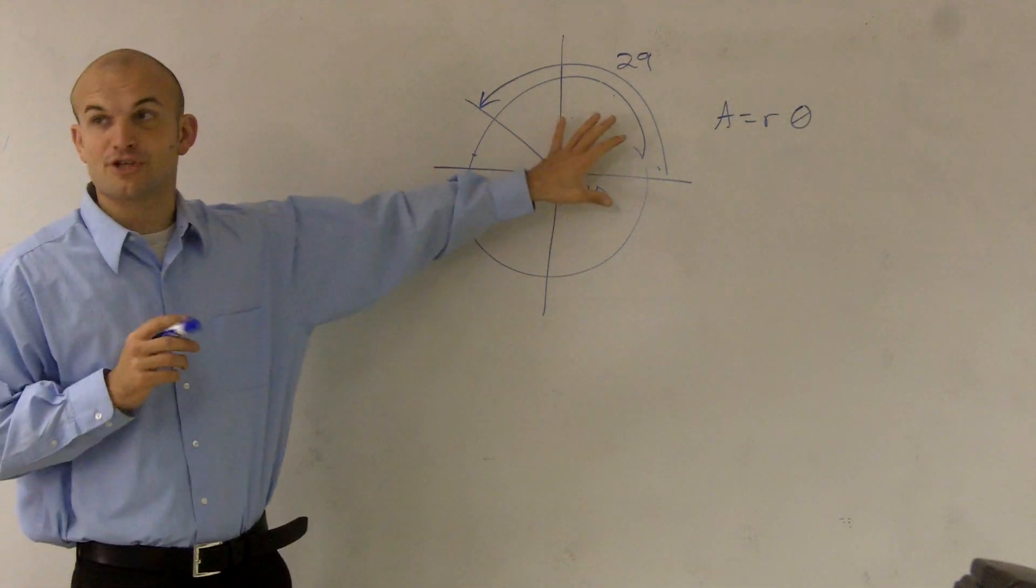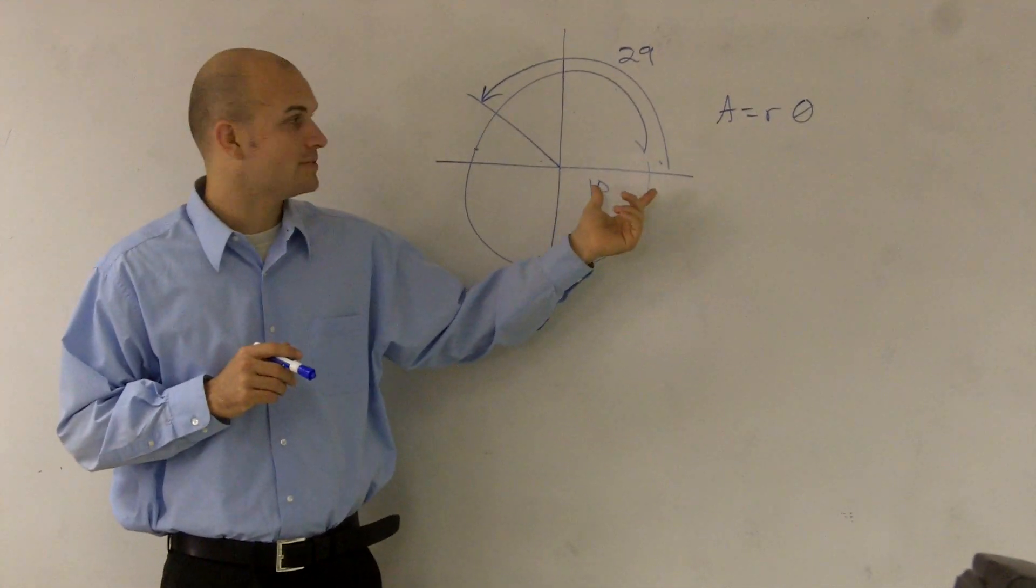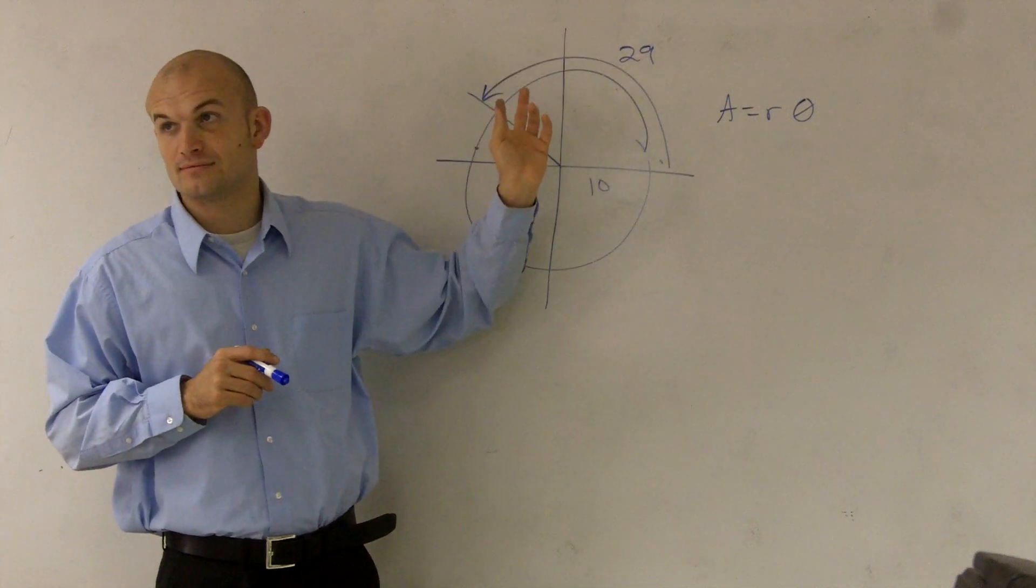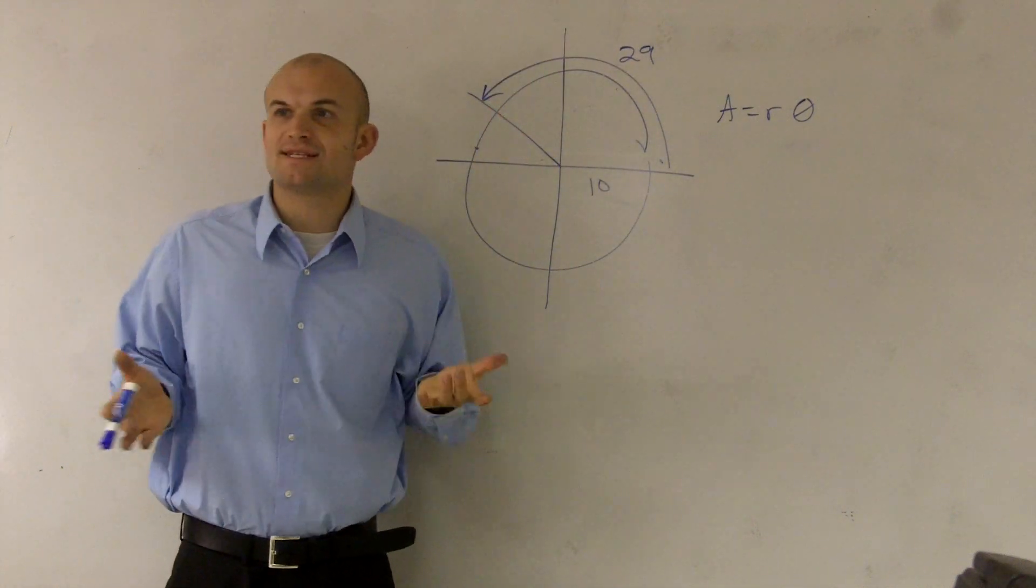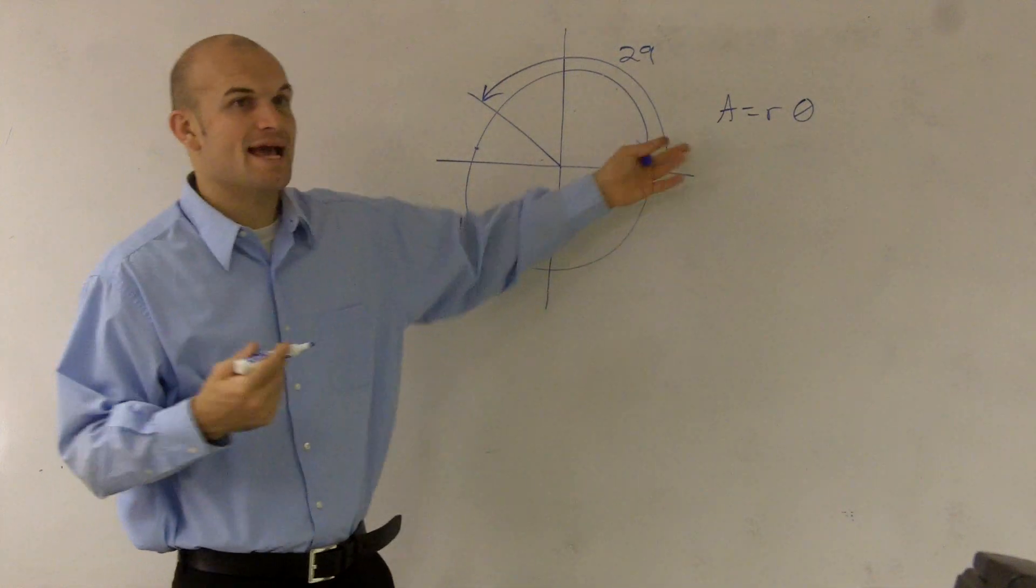So therefore, if you guys are given a circle, and you guys are given a radius of 10, and then they say the arc length is 29, what they want to say is, well, what is theta? What is the angle of this? What is actually the angle of this?